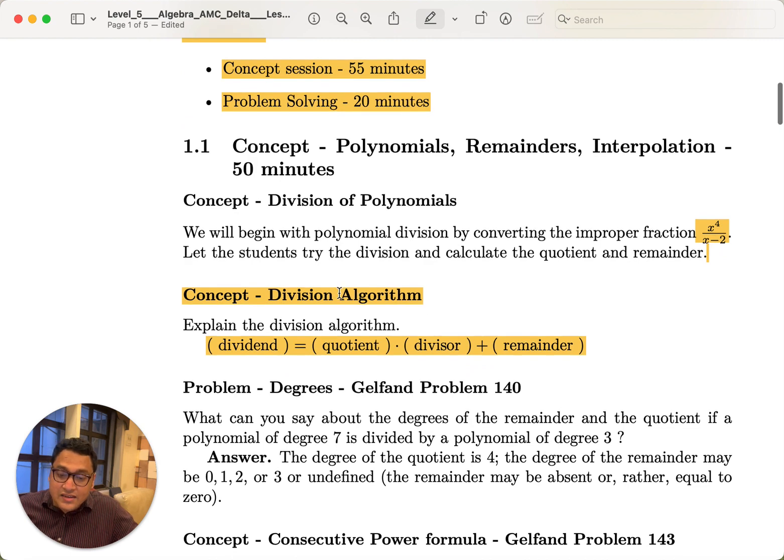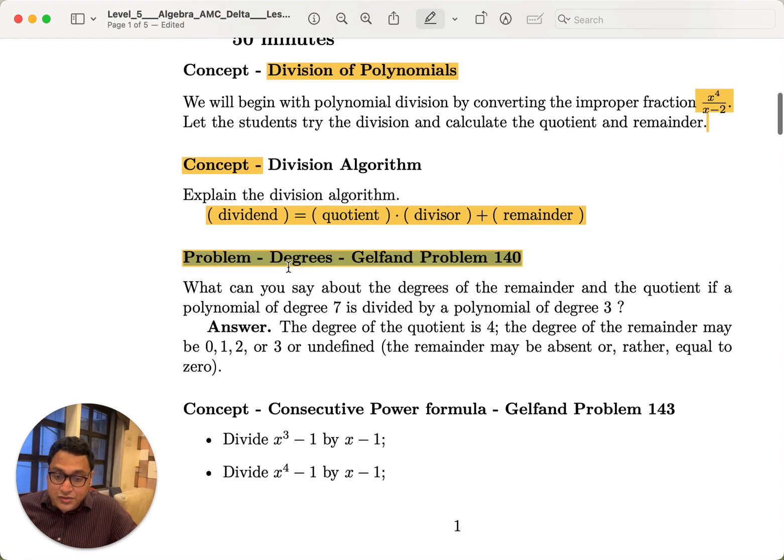Let's see how the concept segment is built around that. We start with the division algorithm, the notion of division of a polynomial. We do an example: x to the power 4 divided by x minus 2. We do some hands-on division and then we see the division algorithm which gives us the form of algebraic division. Then there is a problem related to degrees, which is Gelfand's problem number 140.